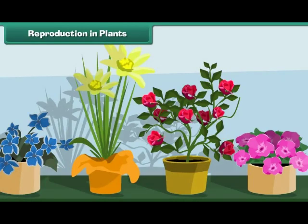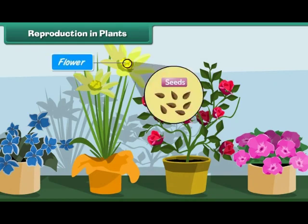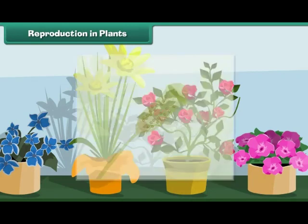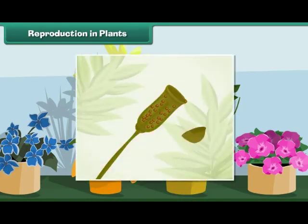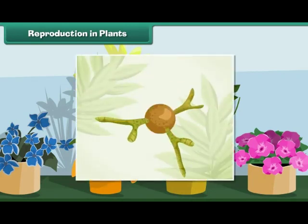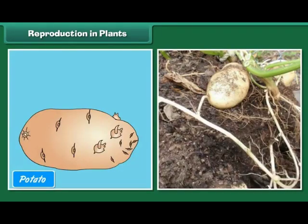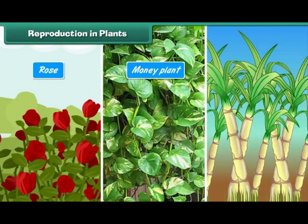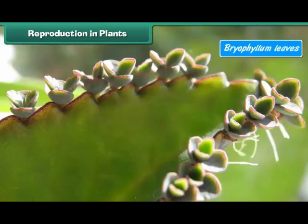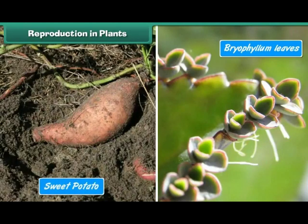Plants reproduce in different ways. Most of the flowering plants produce seeds. Some plants do not produce seeds — they produce spores which can grow into a new plant. Some plants can reproduce from their body parts. For example, potato can be developed from an underground stem having buds on it. Rose, money plant, and sugar cane can be developed from stem cuttings. Bryophyllum can be developed from its leaves. Sweet potato grows from its roots.